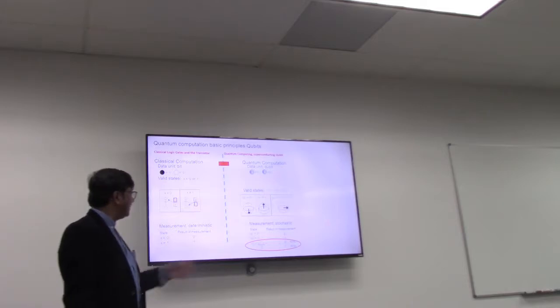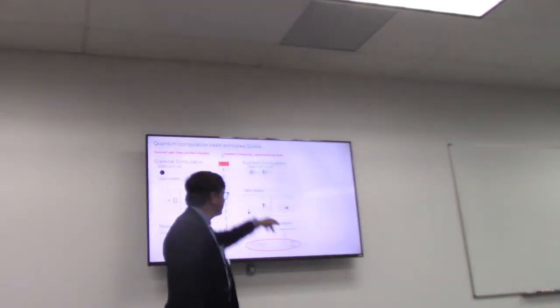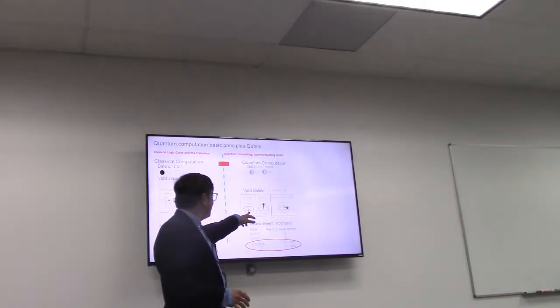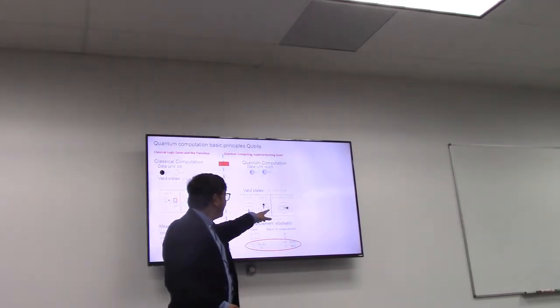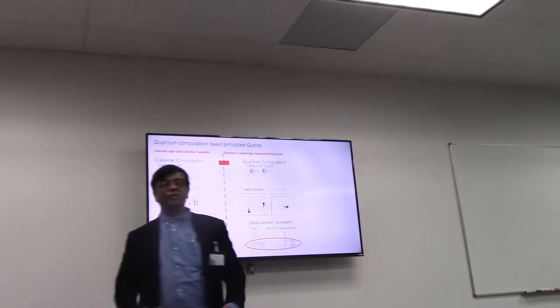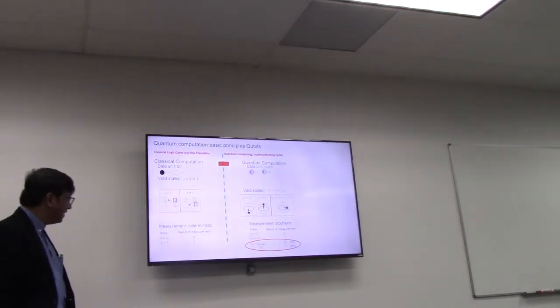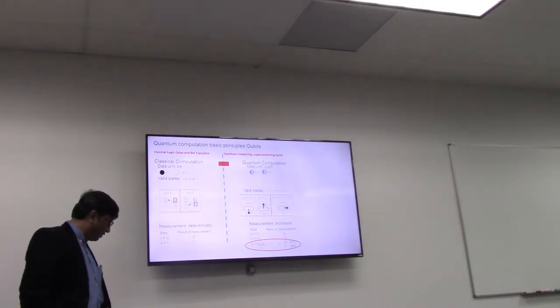This sphere, this arrow shows actually the state. For example, down is 0, up is 1, and something in between zero and one, a combination. And this is not there in classical computers.